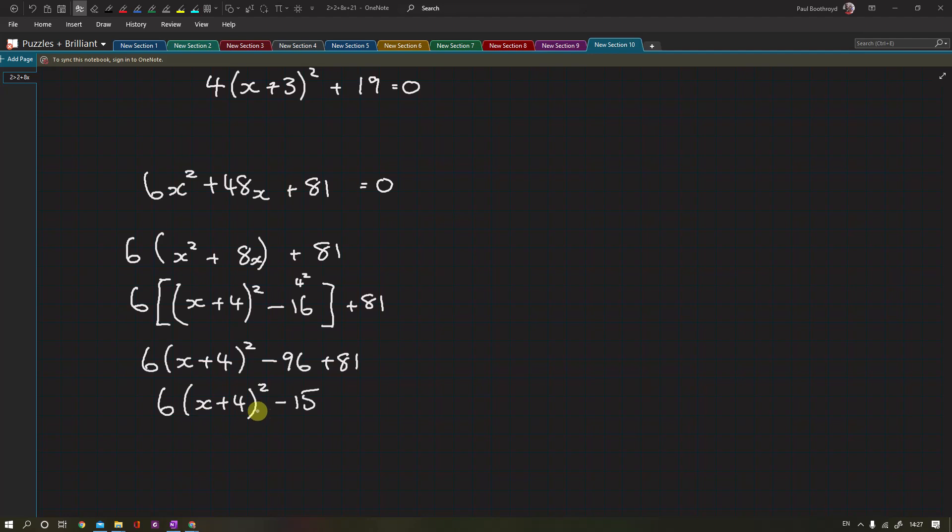We can now manipulate this to solve an equation where this equals 0. So let's take 6(x+4)² - 15 equals 0. Take the 15 to the other side and divide by 6.